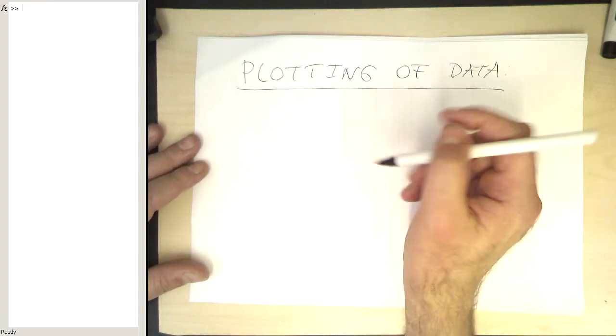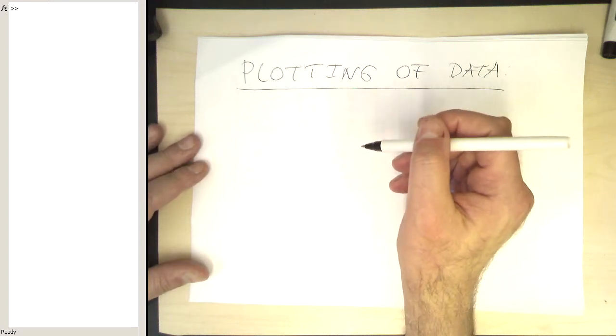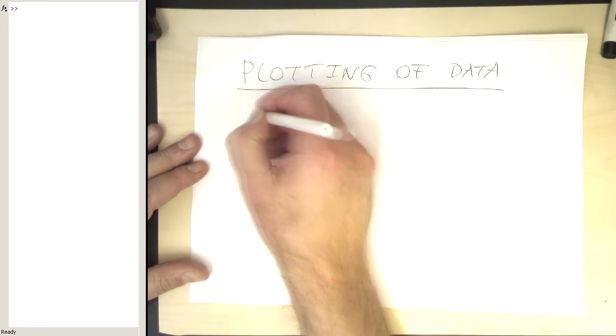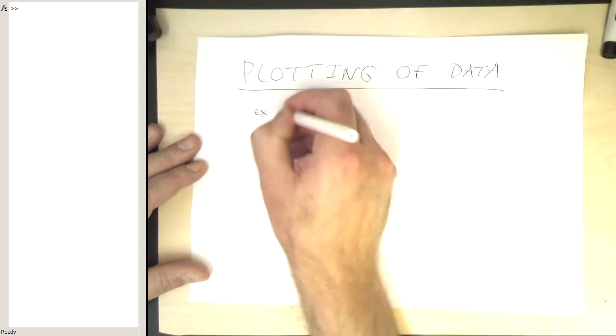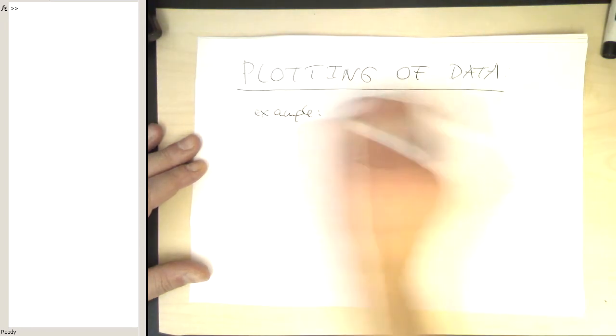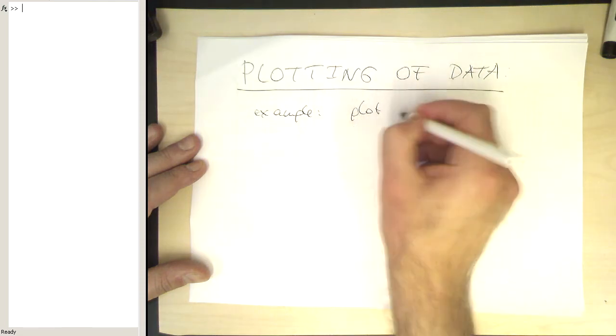Now we have created vectors and obviously we would like to plot the content of these vectors. So let's do an example, let's just plot a sine wave.